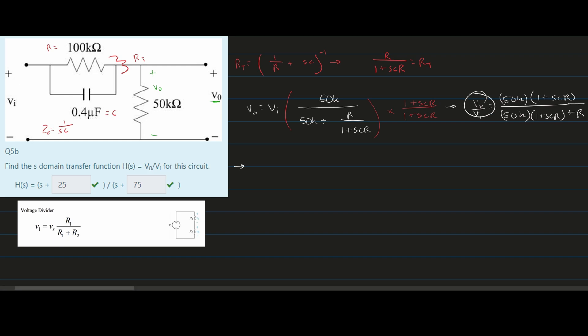We know this is equal to H of S, which is what we want to find. We have H of S equals 50,000 times 1 plus S times C, which is 0.4 times 10 to the negative 6, times our resistance, which is 100 kilohms. That's the numerator.